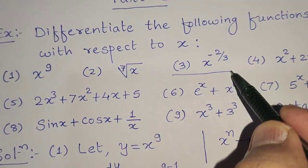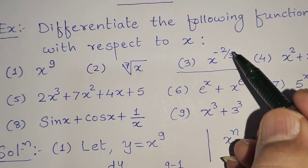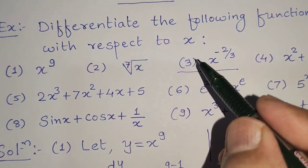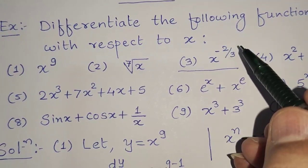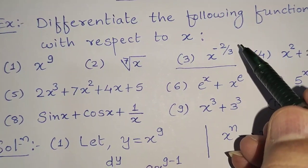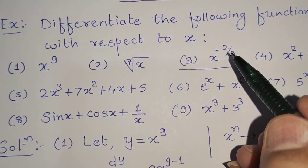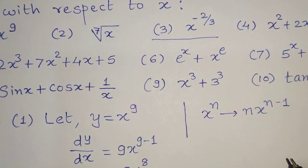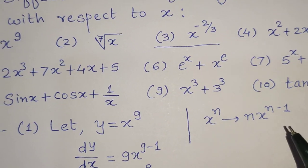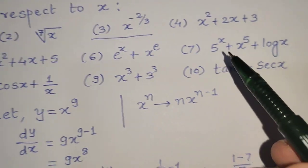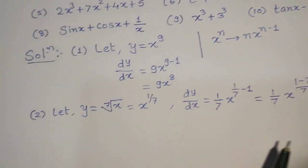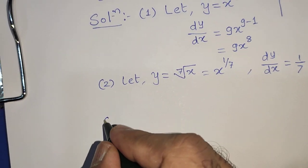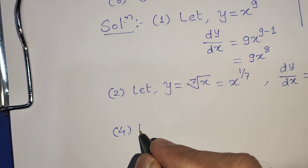Similarly, for the third example, x raised to minus 2 by 3, where n is minus 2 by 3. The derivative is minus 2 by 3 times x raised to minus 2 by 3 minus 1. You can check this in homework using the same formula: n times x raised to n minus 1.